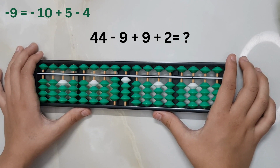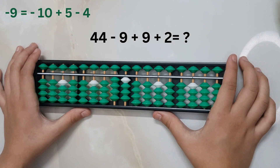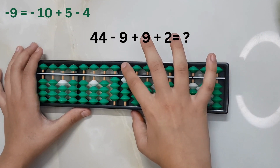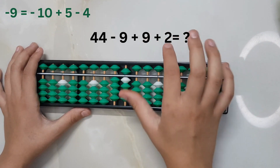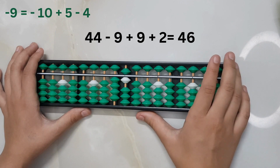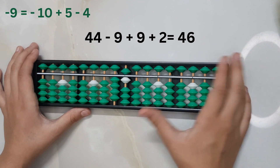Plus 2. We cannot add 2 directly here, and the big friend formula for adding 2, which is plus 10 minus 8, also cannot be used. So let's think of the small friend formula for adding 2: plus 5 minus 3. That can be used here, so we will take help from the small friend formula. The answer is 46.